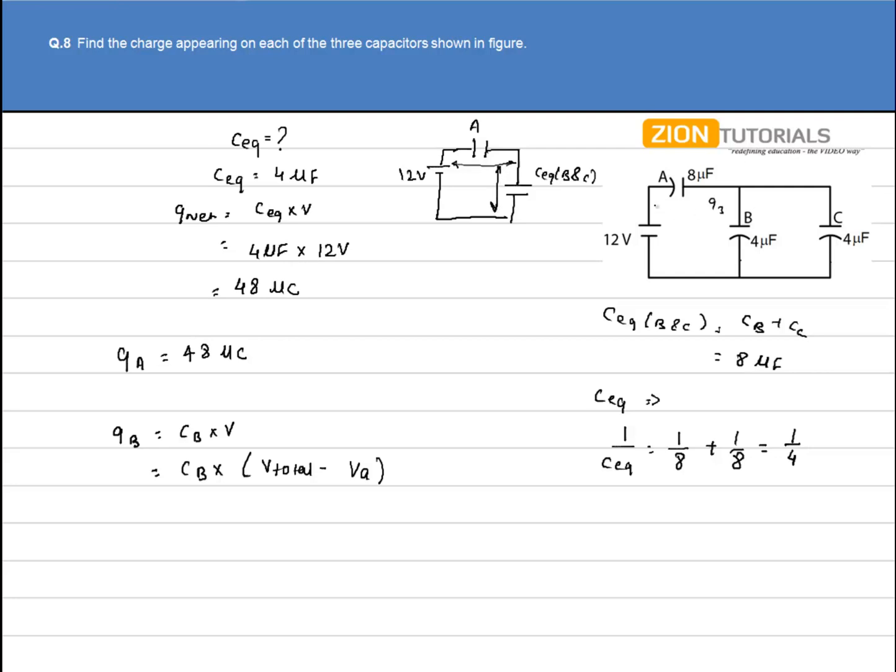If Va potential is dropped across this capacitor, then remaining, that is 12 minus Va, will be dropped across B and C. Since B and C are in parallel, the potential between both plates will be same, that is equal to 12 minus Va.